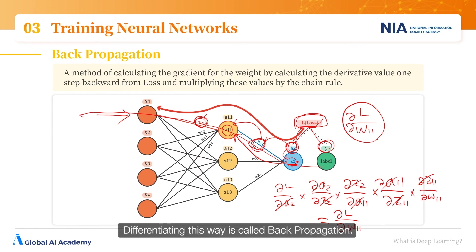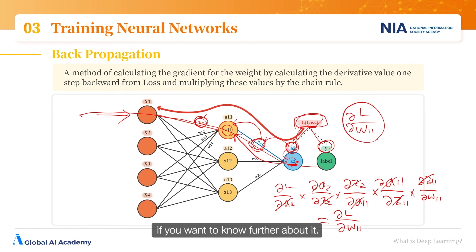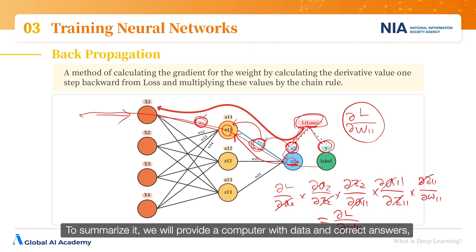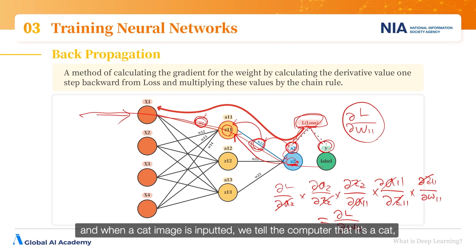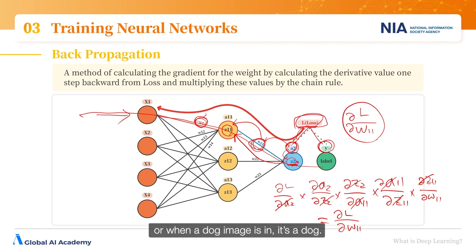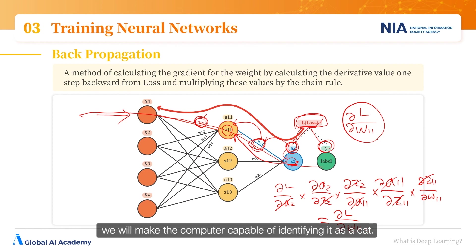Differentiating this way is called back propagation — you can search for more information if you want to know further. To summarize: we provide a computer with data and correct answers and let it find the rules on its own instead of teaching it any rules. We input a bunch of cat and dog images; when a cat image is inputted we tell the computer it's a cat, when a dog image is inputted it's a dog. Later, when we input a new cat image, the computer will be capable of identifying it as a cat.